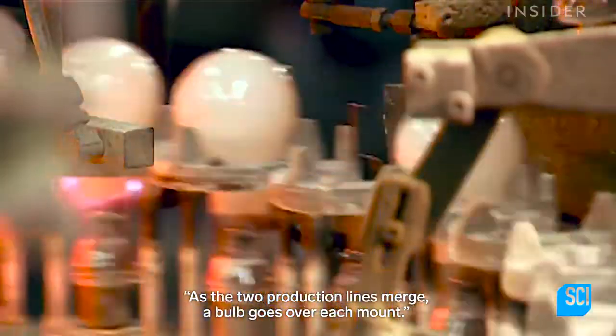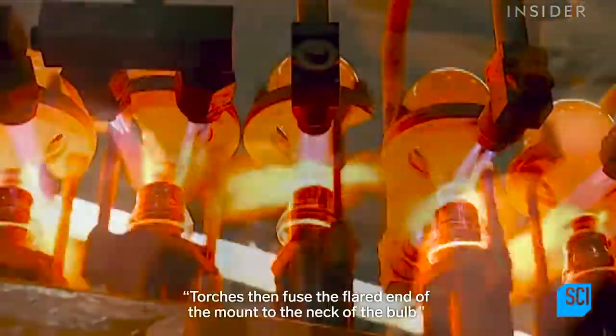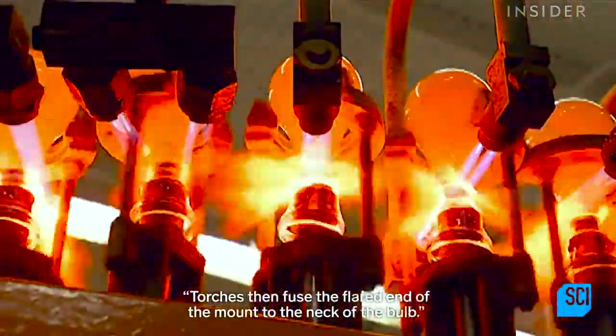As the two production lines merge, a bulb goes over each mount. Torches then fuse the flared end of the mount to the neck of the bulb.